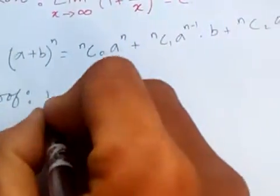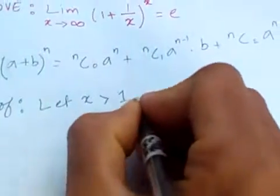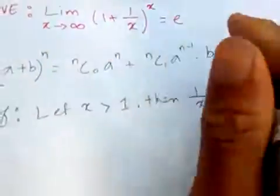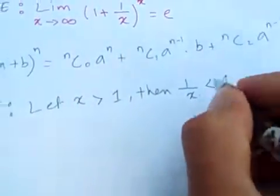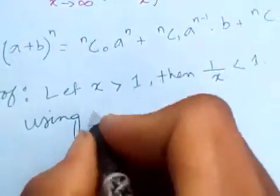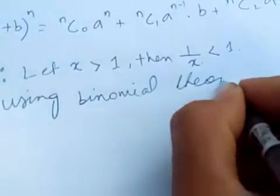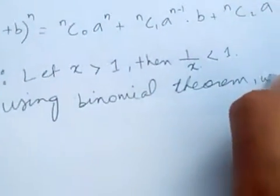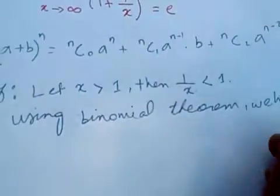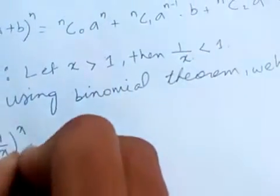Let x be greater than one, then one over x is less than one. Using the binomial theorem, we have (1 + 1/x) to the power x.